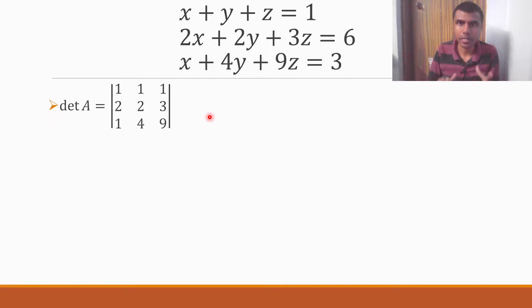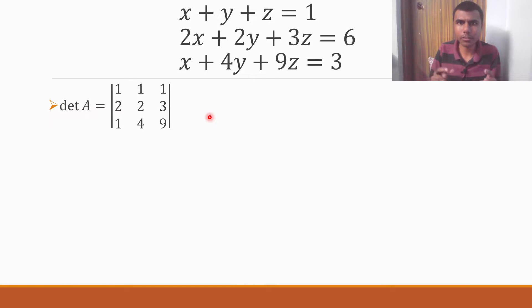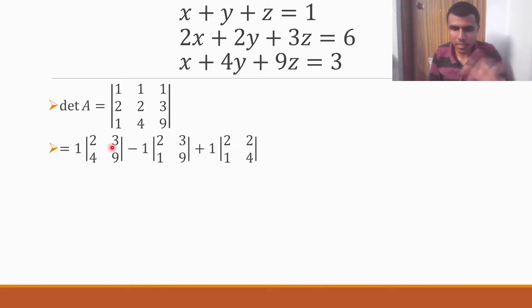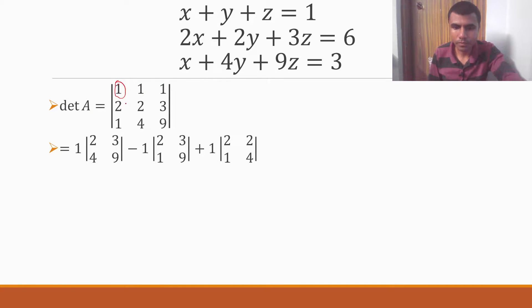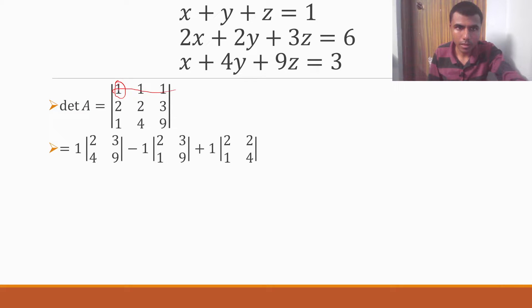I hope you already know how to find the determinant. But if you don't, I'll explain — I'll go a bit slow here. I'm going to take the first row. So first: 1 into the determinant of the remaining elements. Close the row and column in which 1 is present. What's left? 2, 3, 4, 9. So 1 into det of [2 3; 4 9]. In between, a minus sign comes.